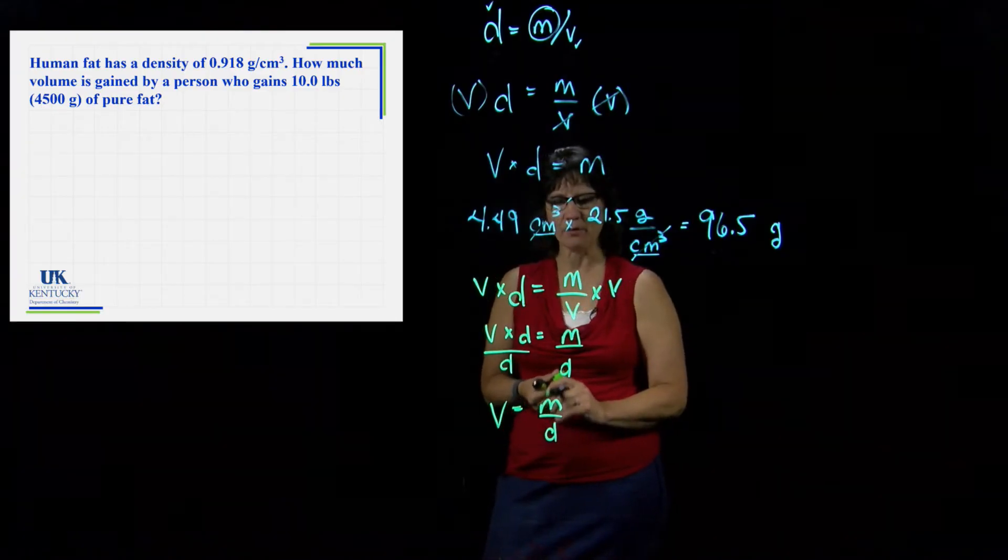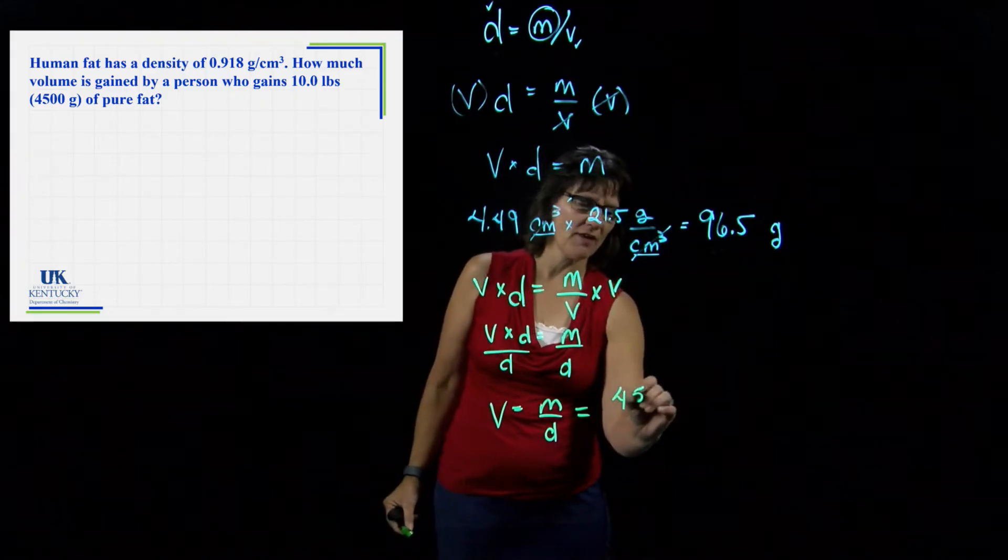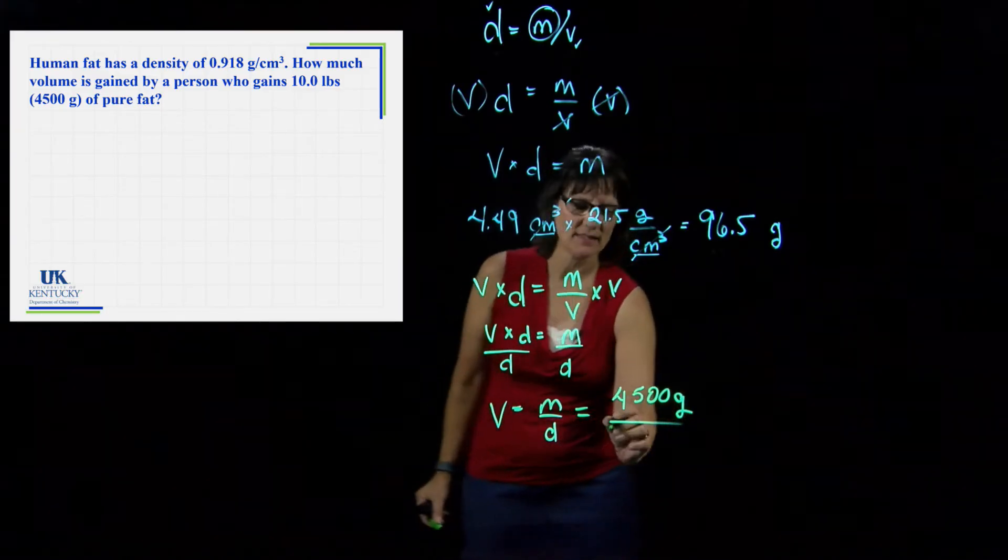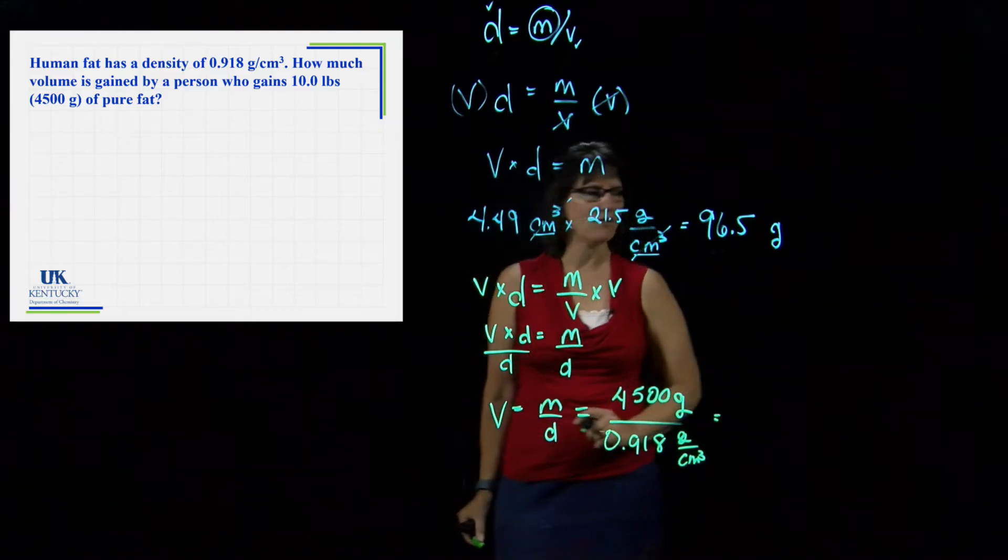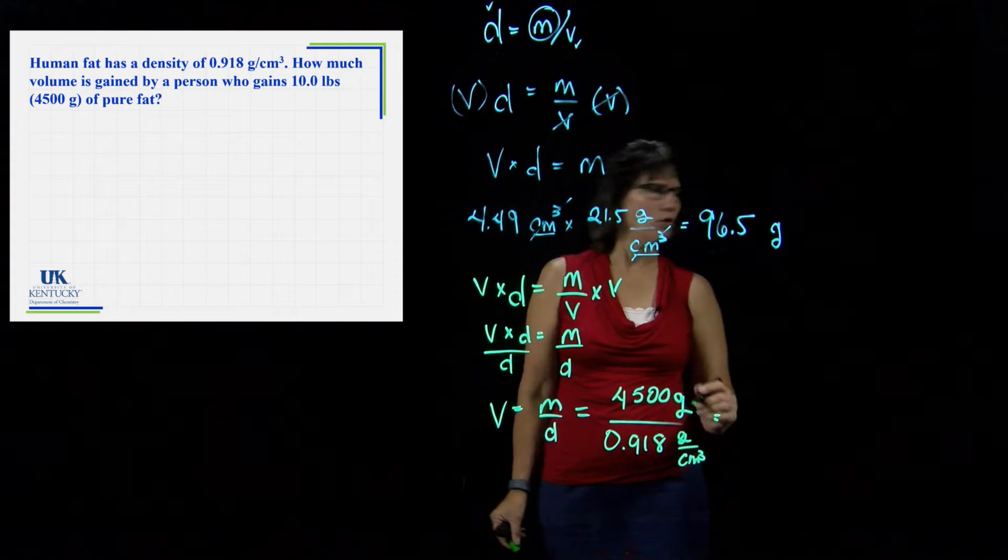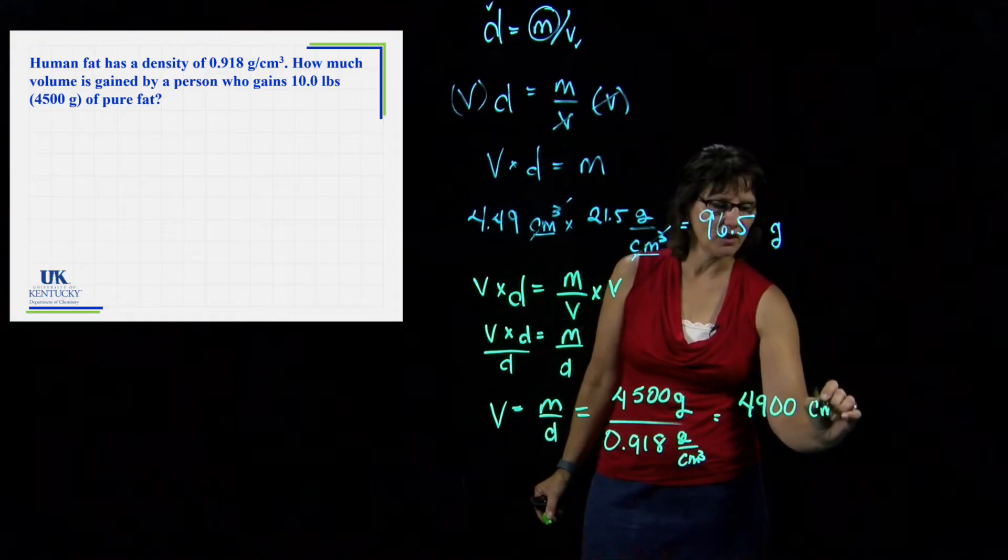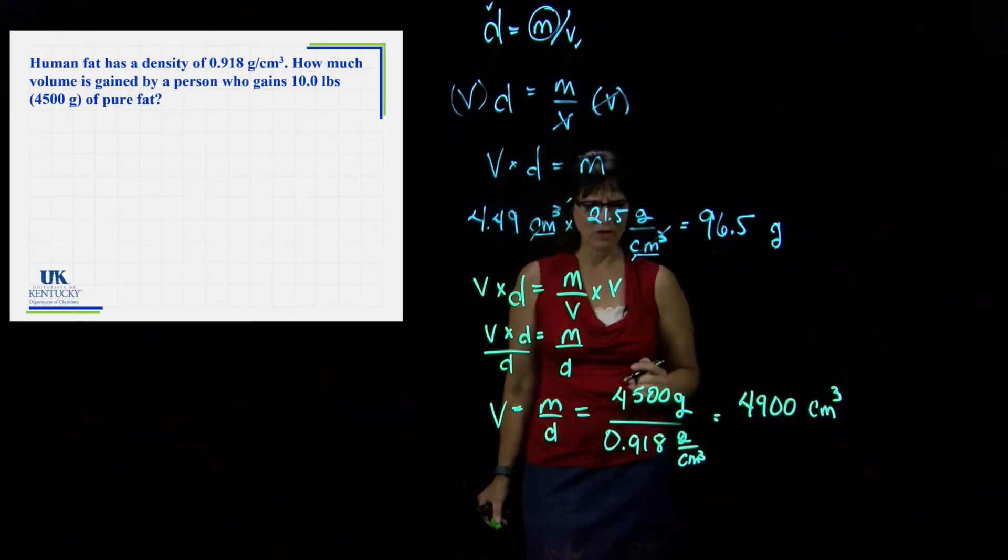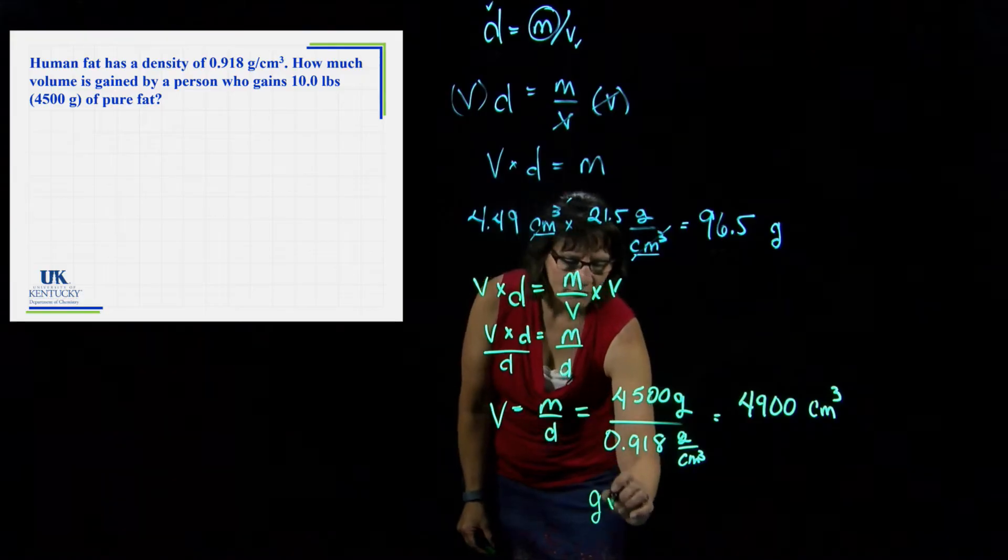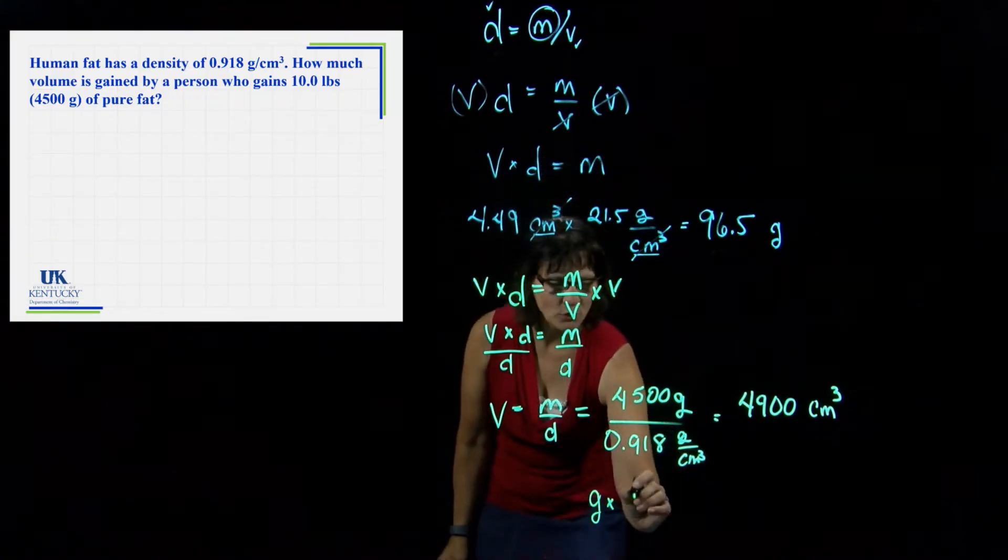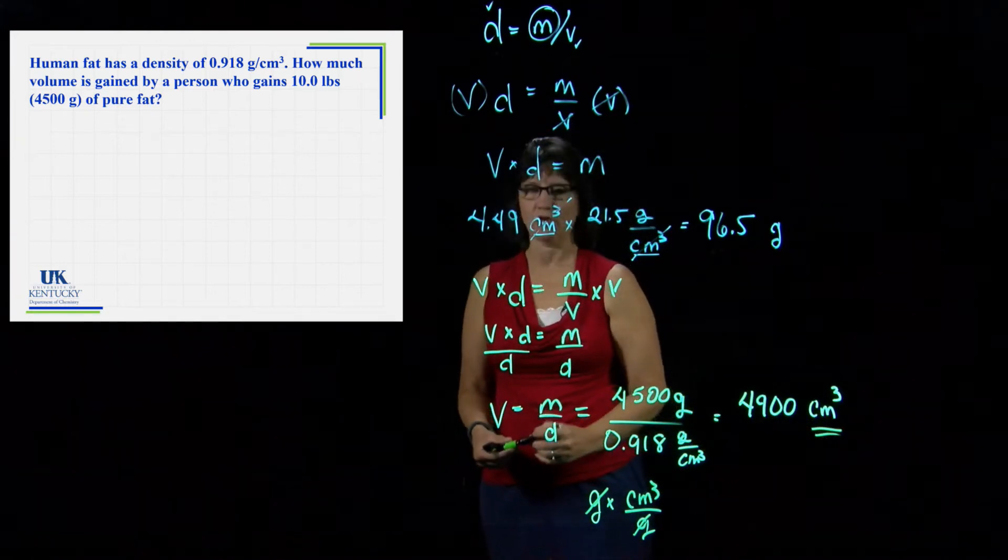For this problem, we're going to plug in the numbers they gave me. I need to use the mass in units of grams, so I'm going to use 4500 grams. The density is 0.918 grams per cubic centimeters. This shows me that I would divide those two numbers. As I divide, I get 4900 cubic centimeters. When you divide by a fraction, it's the same as multiplying by its reciprocal. The grams are canceling and we are left with cubic centimeters.